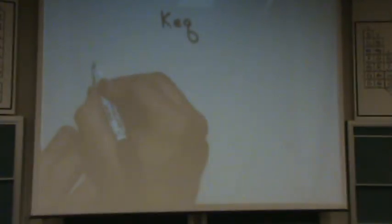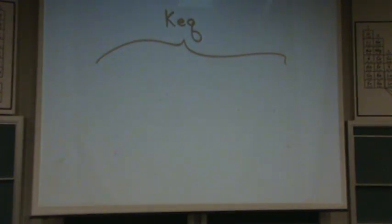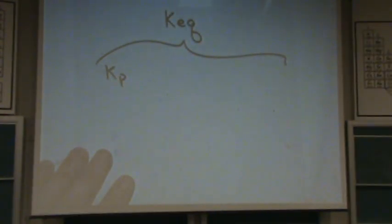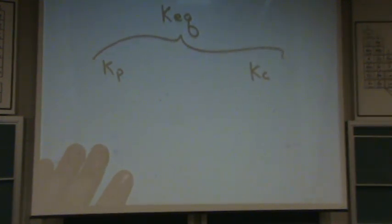All right. All the different Ks. The granddaddy is KEQ. This has two family lines. One line is KP. That line has died. The other line is KC. This line is very big.